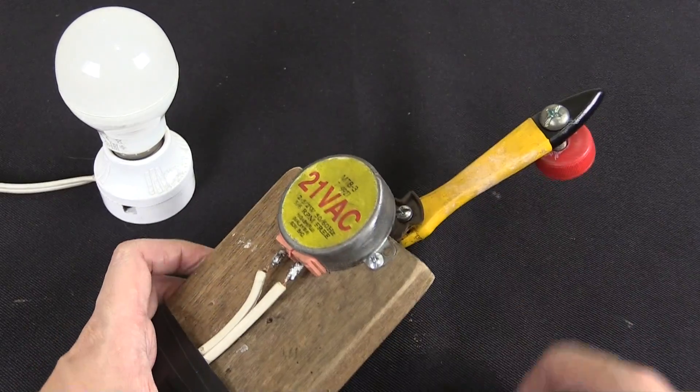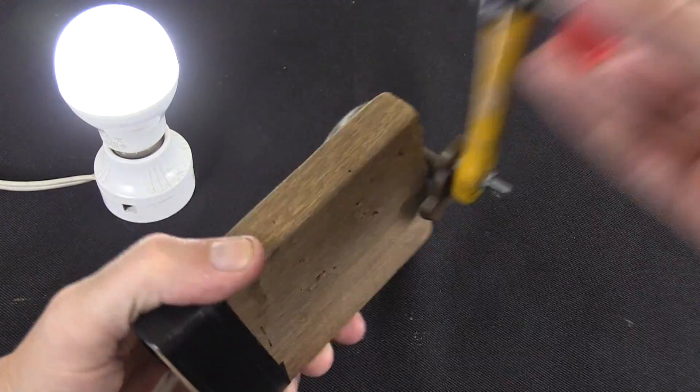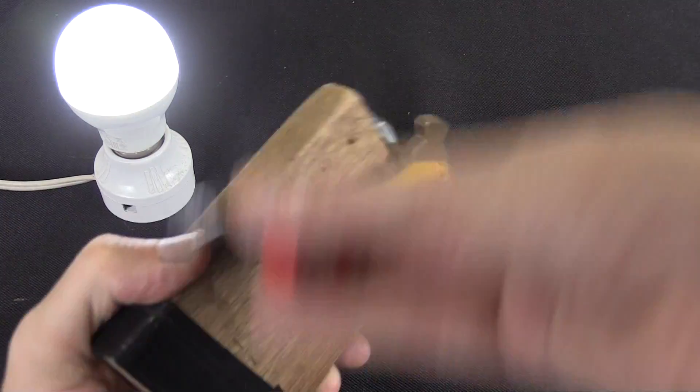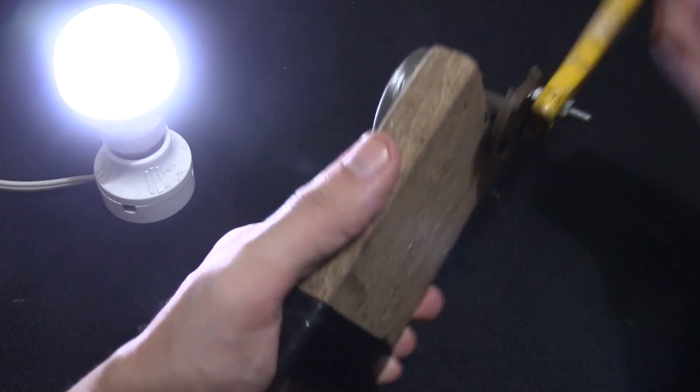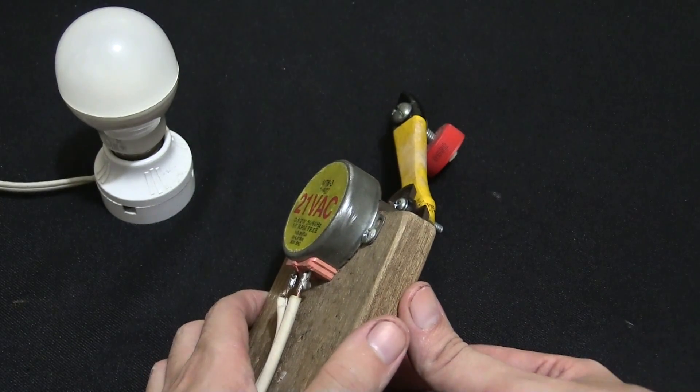If I spin this, this AC light bulb should light up. And now I've turned off my video lights, let's try again. You can see it's actually pretty bright.